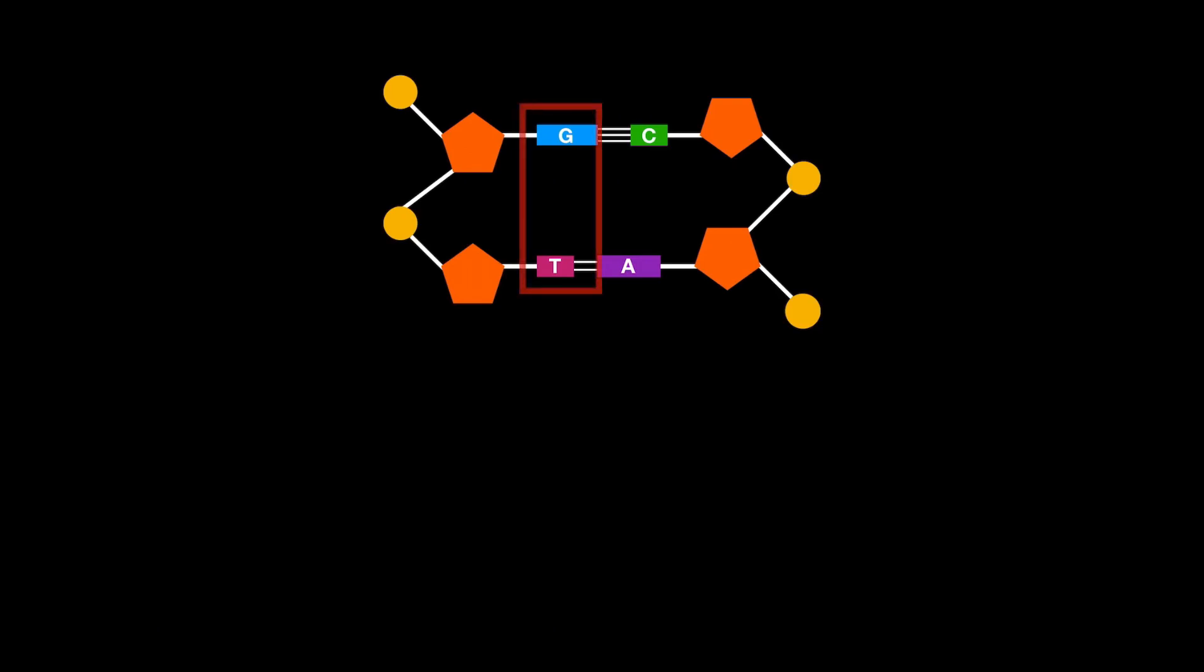To illustrate the diversity in the sequence of bases we could observe in DNA, let's take an example whereby we have two bases on one strand of DNA. As you can see, this sequence currently reads from top to bottom as GT.